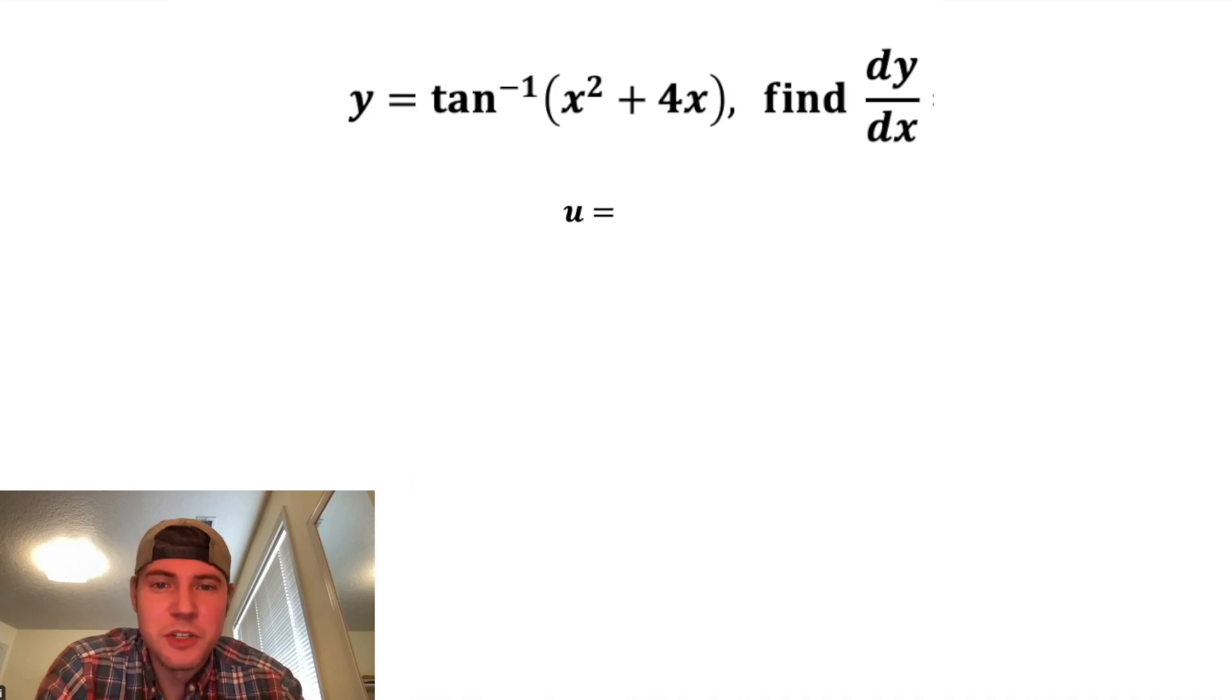First step, I'm gonna use u substitution. I'm gonna set u equal to this inside here, so u equals x squared plus 4x. And then du would be the derivative of this. The derivative of x squared is 2x, and the derivative of 4x is 4. And now we can write this as y equals tangent inverse of u.